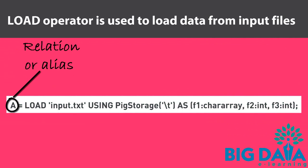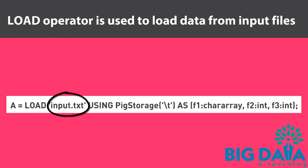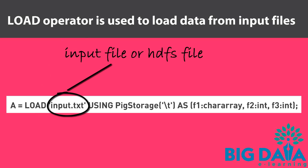Here, A is the relation. A relation is like an alias which contains the data. Load is the operator that loads the data from the input file. Input.txt is the input file from where we are going to load the data. The file name is specified within single quotes. When loading data from HDFS, the HDFS file can be specified within single quotes as well.